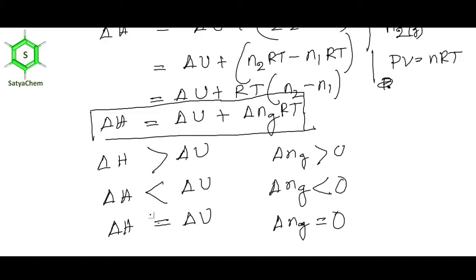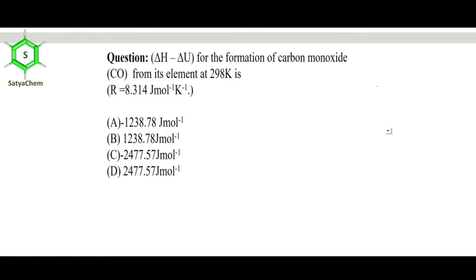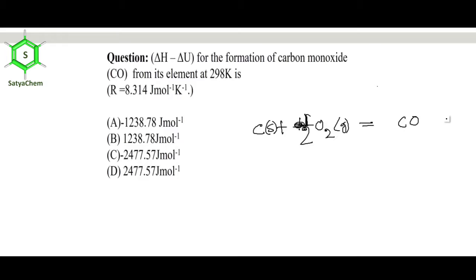Now let us solve a problem. Calculate delta H − delta U for the formation of carbon monoxide from its elements at 298 K, given R = 8.314 J·mol⁻¹. The reaction is: C(s) + ½O2(g) → CO(g). When calculating delta(nG), we consider only gaseous substances — so we exclude solid carbon.